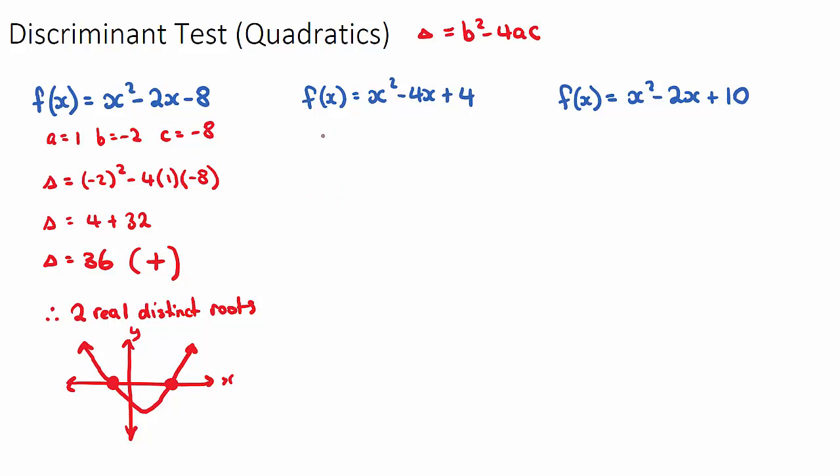Let's have a look at the second example. If we have a equals 1, b equals negative 4, and c equals 4, and we apply our discriminant test, so negative 4 squared minus 4 times 1 times 4, our discriminant will be 16 minus 16, which equals 0.